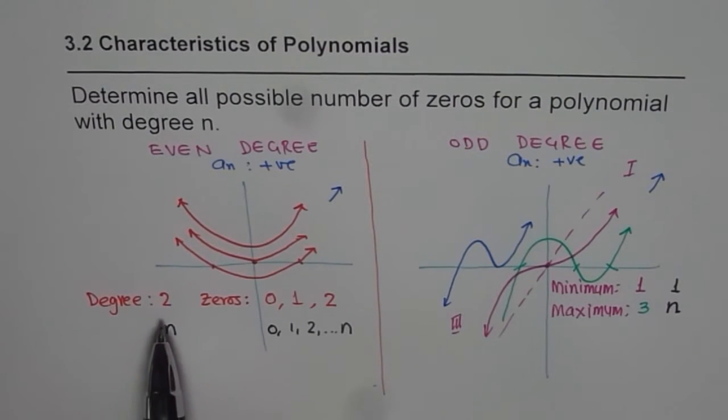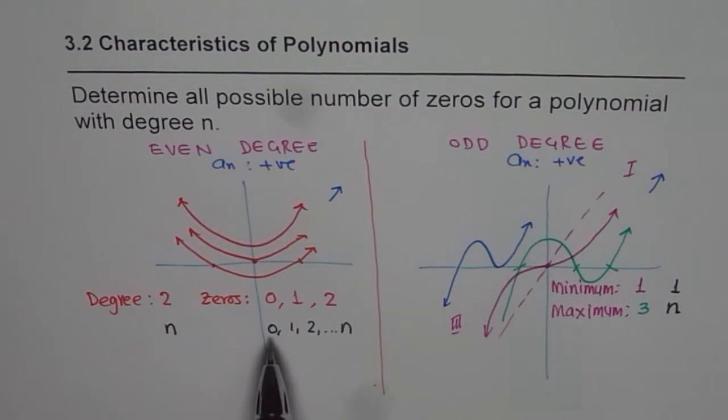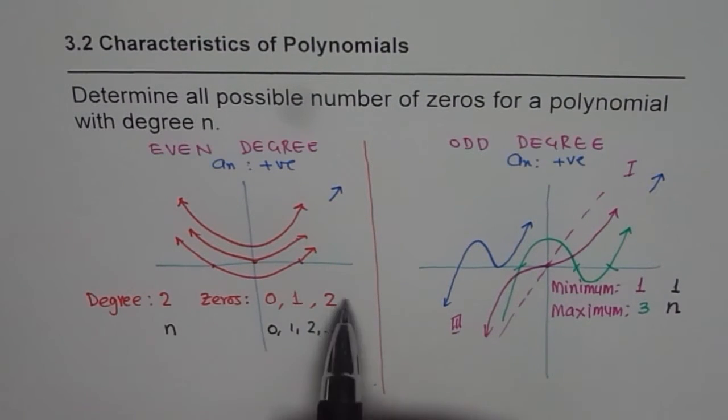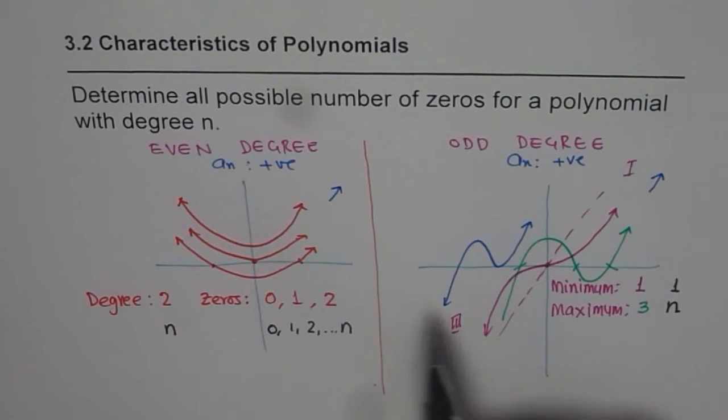So for an even degree polynomial, the number of zeros will be minimum zero zeros and maximum will be n zeros. And total number of zeros can be maximum n. So there are these possibilities: zero to n for even degree and one to n for odd degree polynomial. I hope that is clear.